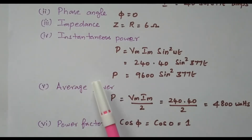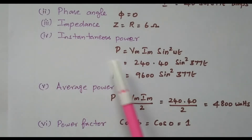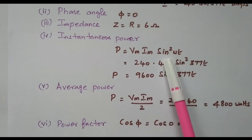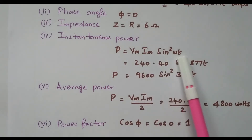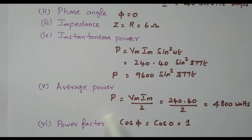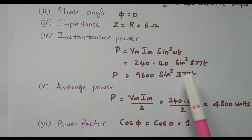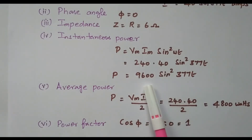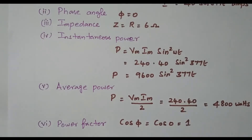For instantaneous power, the formula is P = Vm × Im × sin²(ωt). Vm is 240 and Im is 40, so instantaneous power = 240 × 40 × sin²(377t) = 9600 sin²(377t) watts.